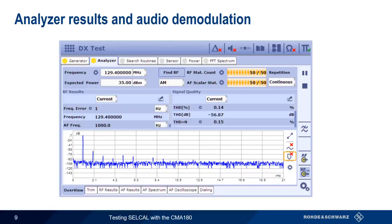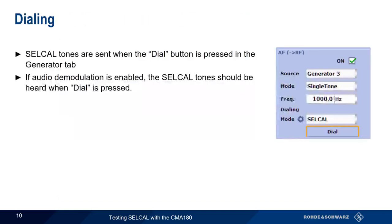Since our RF signal is being modulated with a 1000 Hz tone, we should see something like this after enabling analysis. A 1000 Hz tone should also be audible if audio is unmuted and volume is set appropriately. Back in the generator tab, we press dial to send the two tones cell call sequence. If audio output is enabled, you should hear the 1000 Hz tone interrupted by the cell call tones.